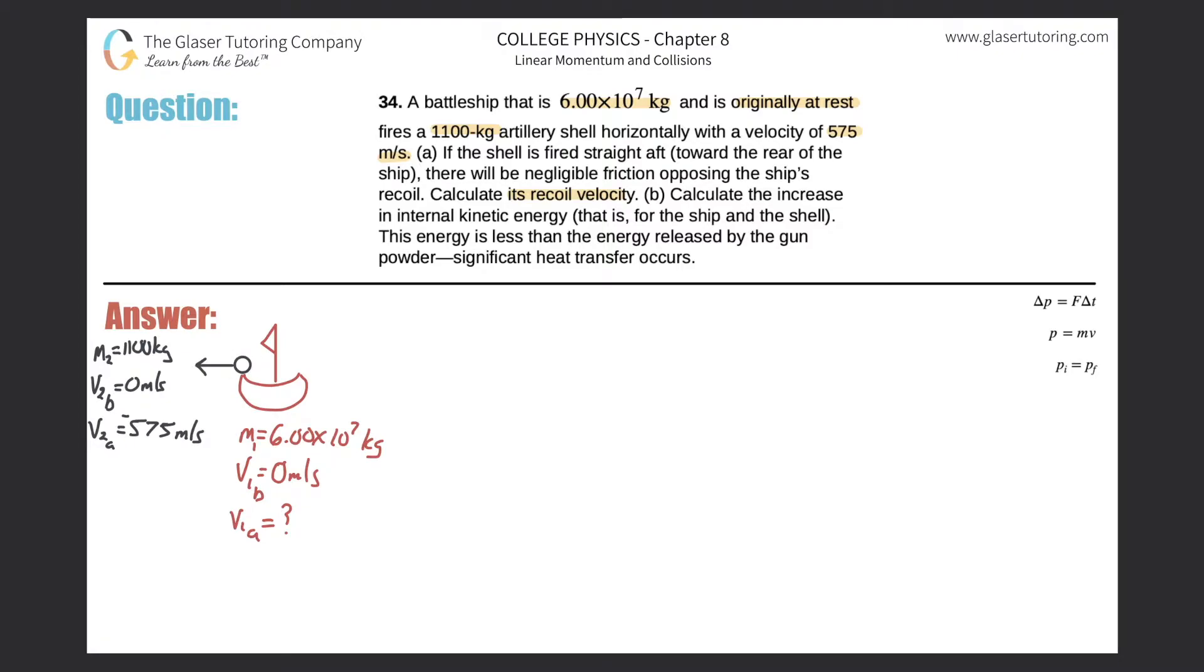The artillery shell is fired off the back of the ship, and I chose it to go to the left. It doesn't really matter which way. It has a certain mass of 1,100 kilograms. The velocity of the artillery shell before it's fired is also zero because it is on the ship. And then after it's fired, it has a velocity of 575 meters per second. I plugged in my negative sign here because the shell is moving to the left.